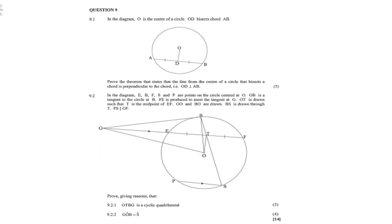Now, this is Question 9.1, Geometry. In the diagram, O is the center of the circle, OD bisects AB. That means AD equals DB. So, you must prove the theorem that states that the line from the center of a circle that bisects a chord is perpendicular to the chord. That means OD is perpendicular to AB.